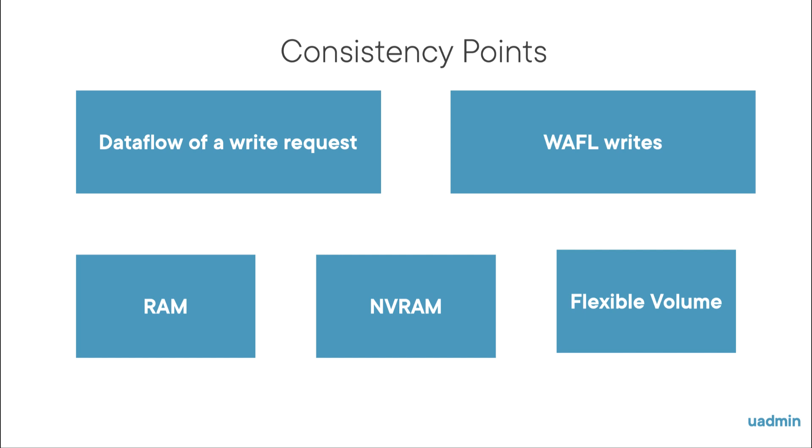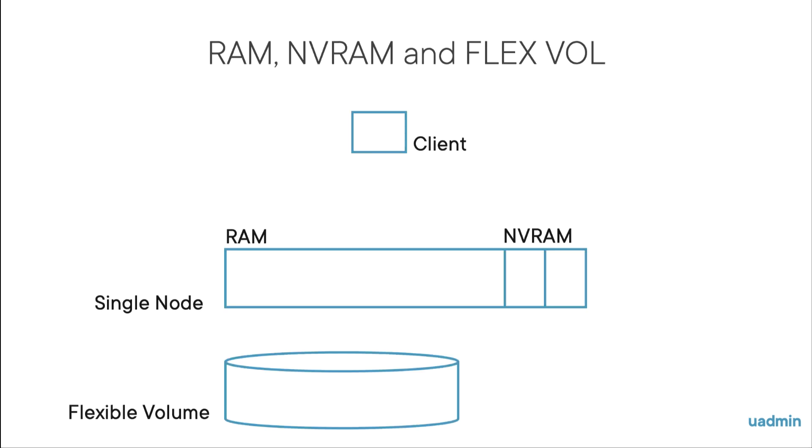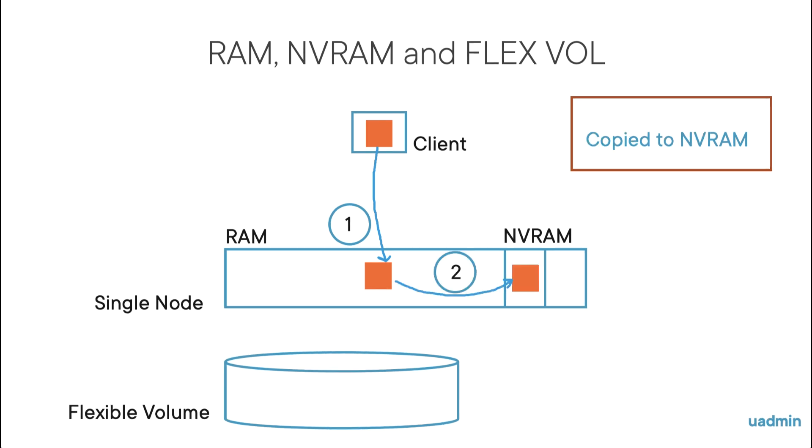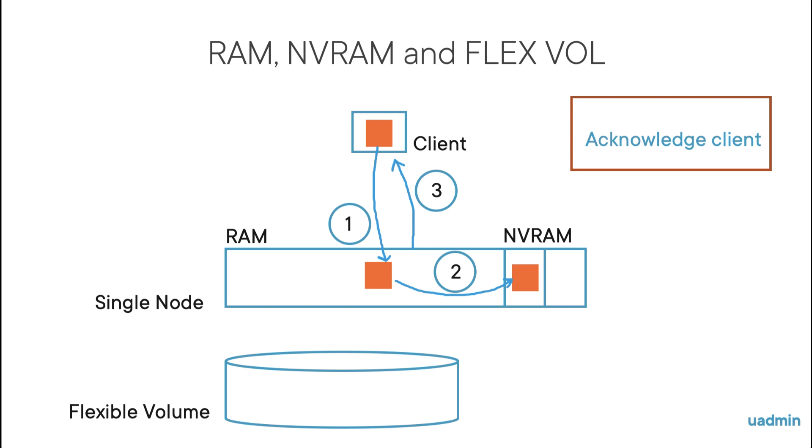So here's RAM, NVRAM, and a flexible volume. When data enters the node, it is first written to RAM. Then it is copied to NVRAM. When data is in NVRAM, the client will be acknowledged that the data is safe.